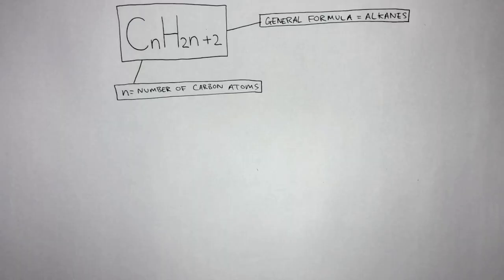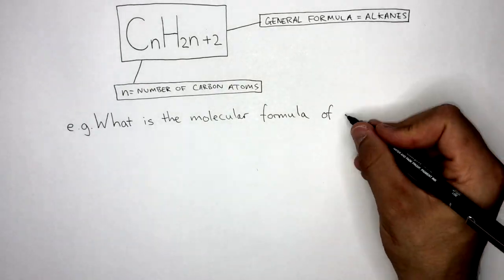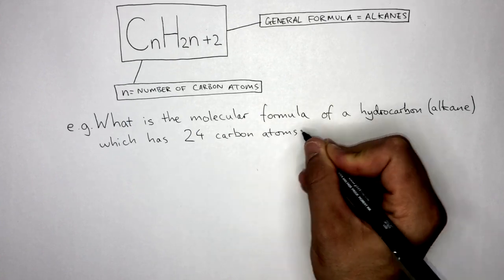To understand how to use the general formula to figure out the molecular formula of any alkane, let's go through a couple of examples. What is the molecular formula of a hydrocarbon, alkane, which has 24 carbon atoms?